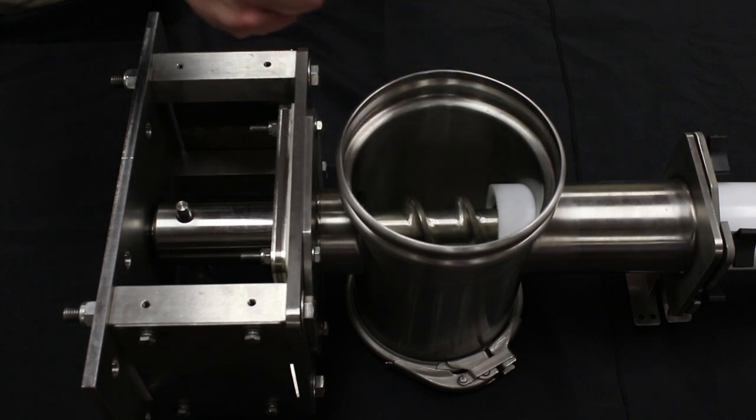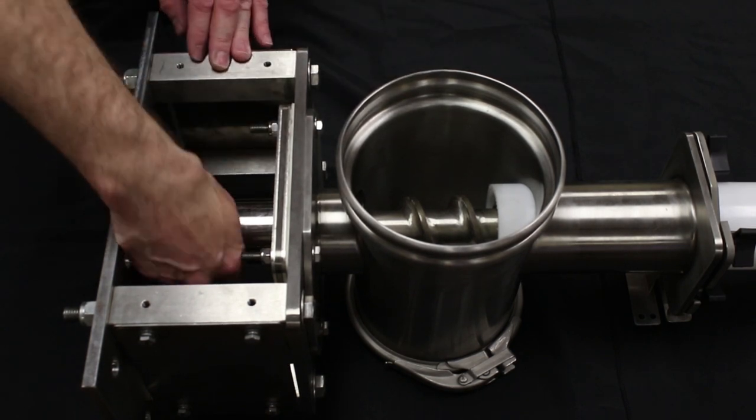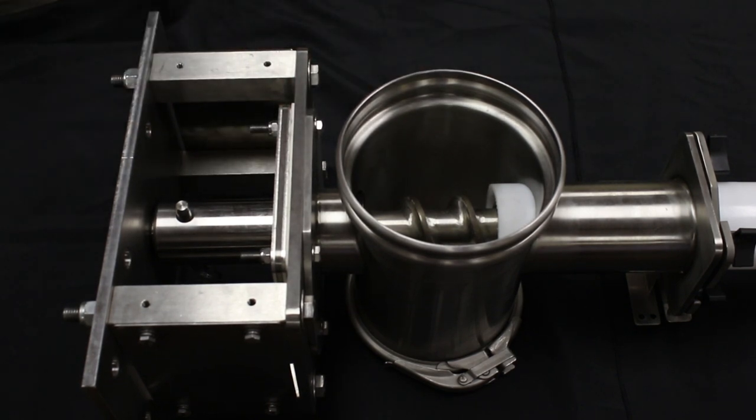You have a flexible screw conveyor where the screw is welded and polished to the motor adapter. When you want to take out the screw quickly, you pull a pin here and then the entire motor adapter and screw can be extracted out the inlet end.